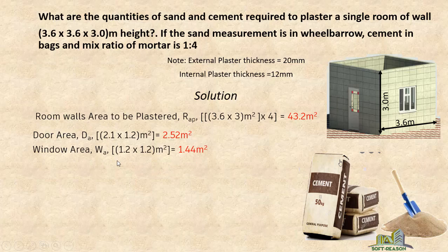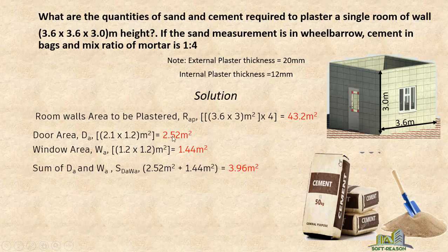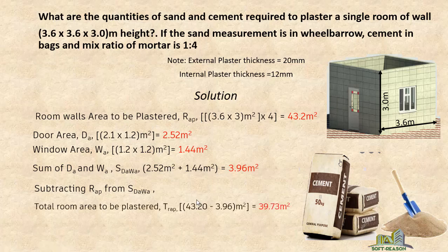The window area: we consider a window size of 1.2 by 1.2, which equals 1.44 square meters. The sum of door and window areas is 2.52 square meters plus 1.44 square meters, which gives 3.96 square meters. Subtracting from the total room wall area gives us the net area to be plastered: 43.2 minus 3.96 equals 39.73 square meters, approximately.